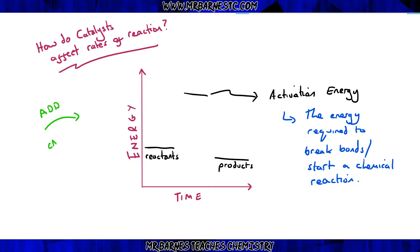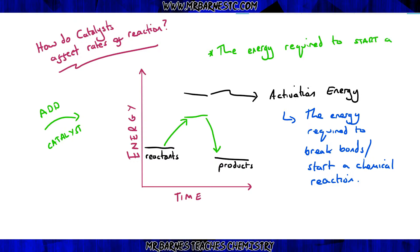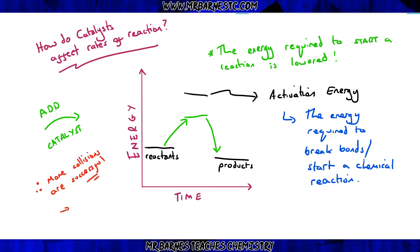If I use a catalyst, what it does is it lowers the activation energy. You can see here I've drawn a line that's lower down, which means I need less energy for that reaction to occur. This means that more of my collisions are successful. I'm not increasing the amount of collisions or the speed of the collisions — I'm just lowering the energy required, making more reactions successful, which increases my rate of reaction.